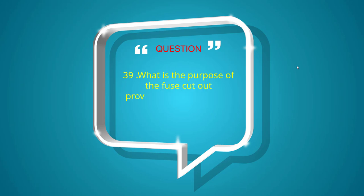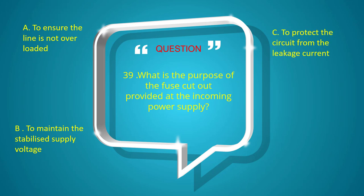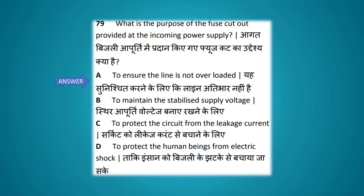What is the purpose of the fuse cutout provided at the incoming supply? Options: to ensure the line is not overloaded, to maintain the stabilized supply voltage, to protect the circuit from leakage current, to protect the human being from electric shock. The answer is to ensure the line is not overloaded.